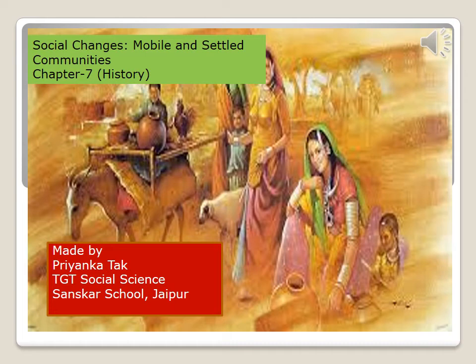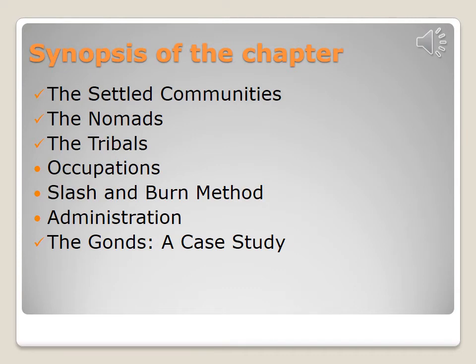Hello children, today we are going to start with the new chapter: Social Changes — Mobile and Settled Communities. In this chapter we will study about the social changes which took place during the medieval period in both types of settlements, like river basins and other fertile areas. We will study about the settled communities, the nomads, the tribals, their occupations, the slash and burn method of agriculture, their administration, and a case study of the Gonds.